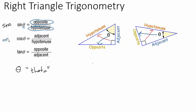The other formulas are cosine and tangent. Cosine is abbreviated C-O-S, and tangent is abbreviated T-A-N. Now I want to talk a little bit about why these formulas work before we get into examples.